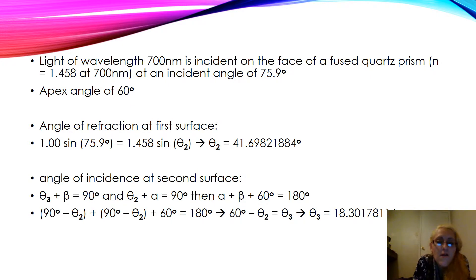The angle of incidence at the second surface: theta 3 plus beta equals 90 degrees and theta 2 plus alpha equals 90 degrees. Then alpha plus beta plus 60 degrees equals 180 degrees. So 90 degrees minus theta 2 plus 90 degrees minus theta 3 plus 60 degrees equals 180 degrees. So 60 degrees minus theta 2 equals theta 3.